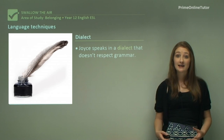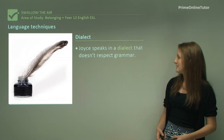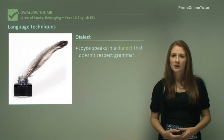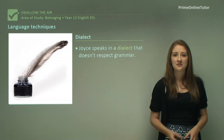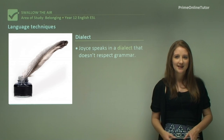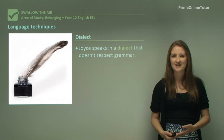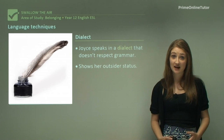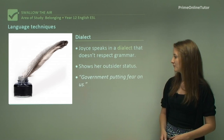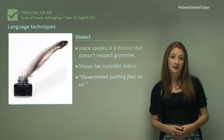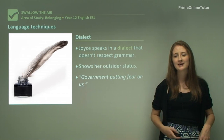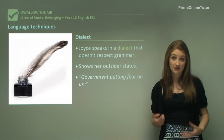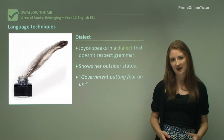If we look at the technique of dialect — Joyce speaks in a dialect that doesn't respect grammar. Again we have this concept of idiom or slang where the author is sacrificing correct spelling and grammar in order to more correctly characterise and give colour to her work. This definitely shows Joyce's outsider status through the way that she talks. So this quote — 'government putting fear on us' — is not grammatically correct, but is really successful in expressing Joyce's language through the way she speaks and interacts with the people around her.